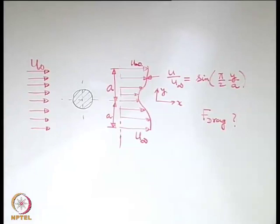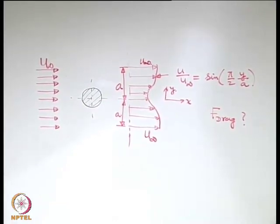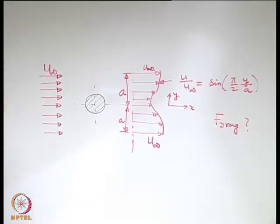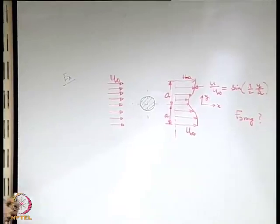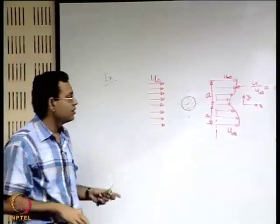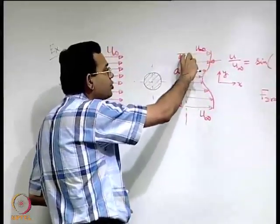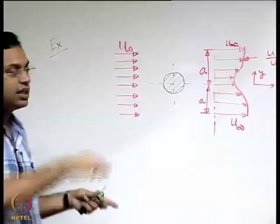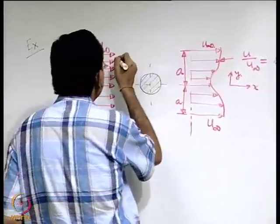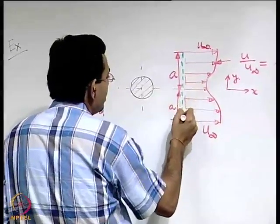We worked out a very similar problem when we were considering flow over a flat plate. This is flow past some body of arbitrary contour, but the philosophy remains the same. We have to identify a control volume and see what is the net force on it. One inlet is straightforward — the flow is entering. The outlet is interesting only up to y equals a or y equals minus a, because beyond that the velocity is uniform. So we take a control volume with one inflow boundary and one outflow boundary.